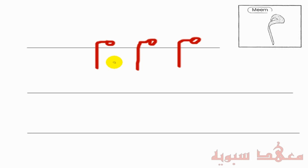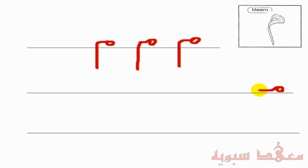That's the way the Meem is written in the isolated form. Now, in the beginning of a word, it's as follows. You start from about here and just go around and then come down, waiting for the next letter.